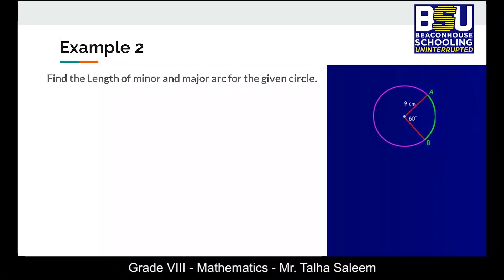The second example. Find the length of minor and major arc of the given circle. As you can see in the figure also that minor arc has been colored green from a to b and the angle subtended by this sector is 60 degrees. So using the formula for arc length that is m over 360 into 2πr and putting the value of m as 60 degrees, we get the answer 9.42 centimeter.